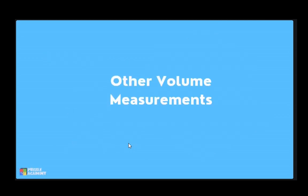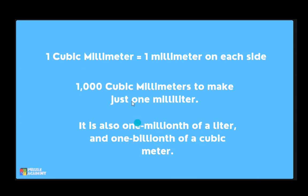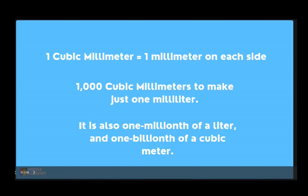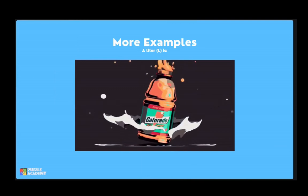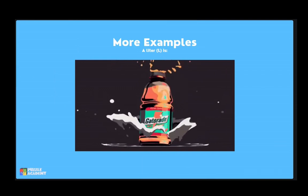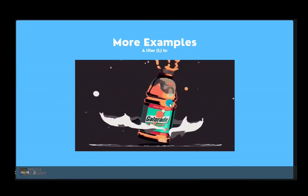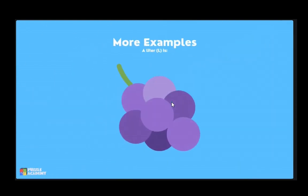You may also come across these other volume measurements. A cubic millimeter is a cube that is 1 mm on each side — it is very small. We need 1,000 cubic millimeters to make just 1 mL. It is also one-millionth of a liter and one-millionth of a cubic meter. As examples, a liter is about the quantity in a sports drink bottle, while a milliliter is about the size of a grape, a fifth of a teaspoon, or exactly 1 cubic centimeter.